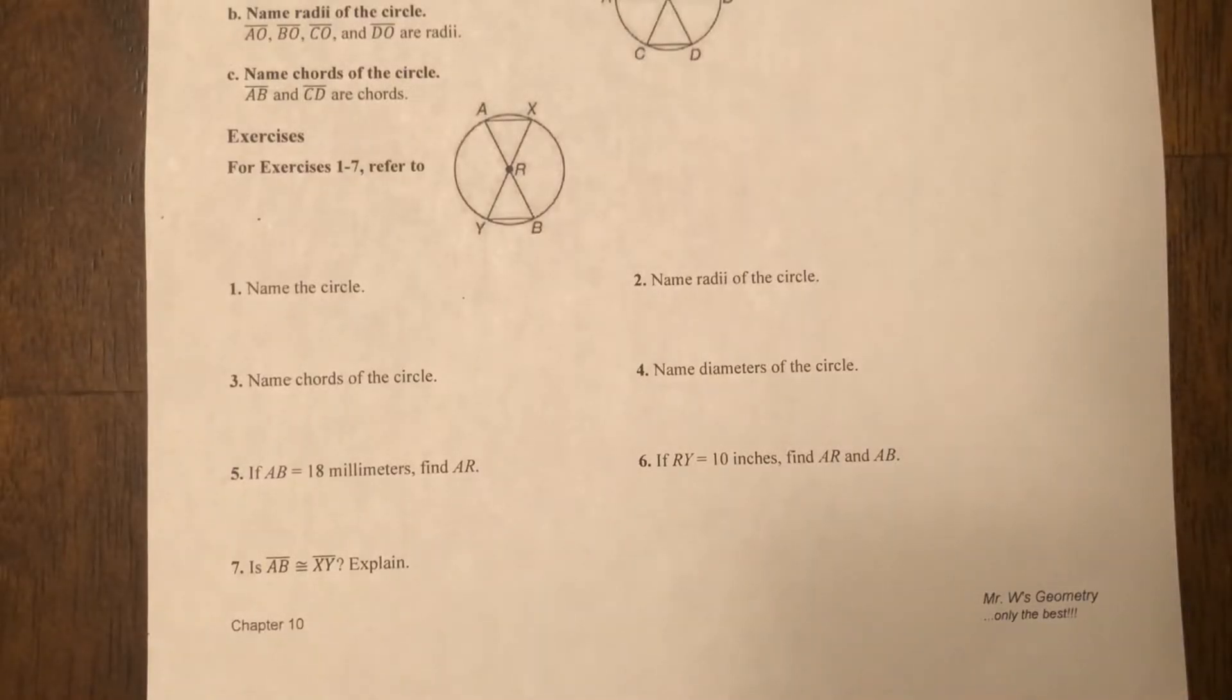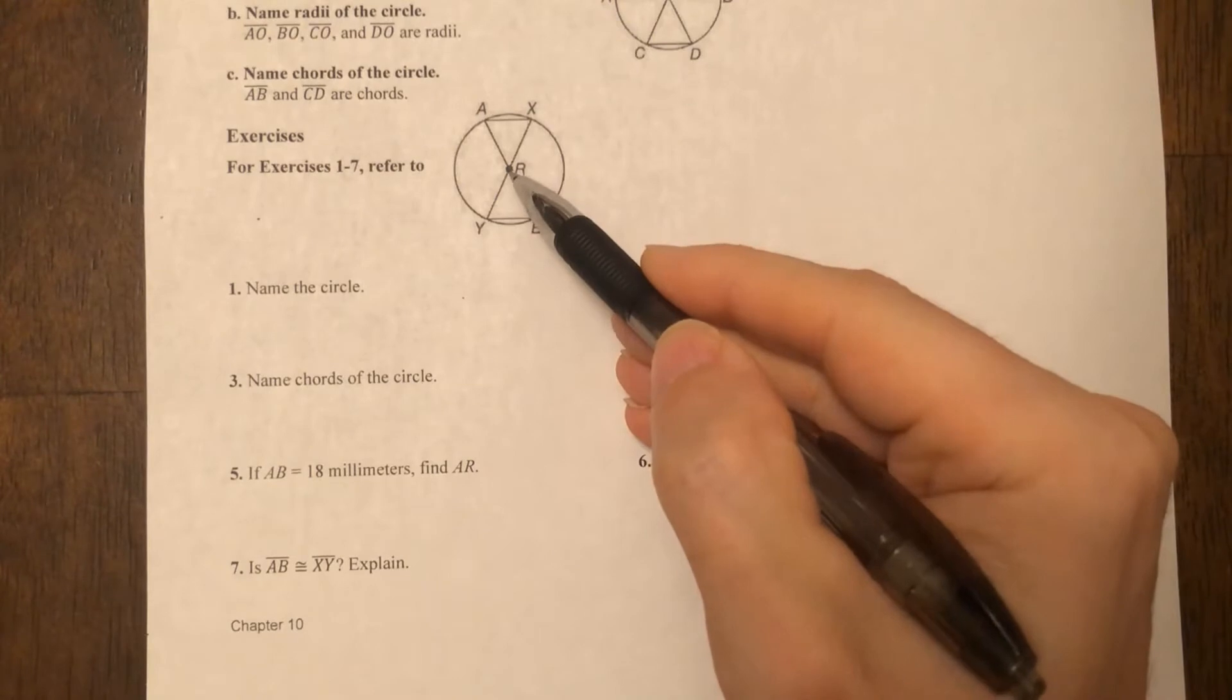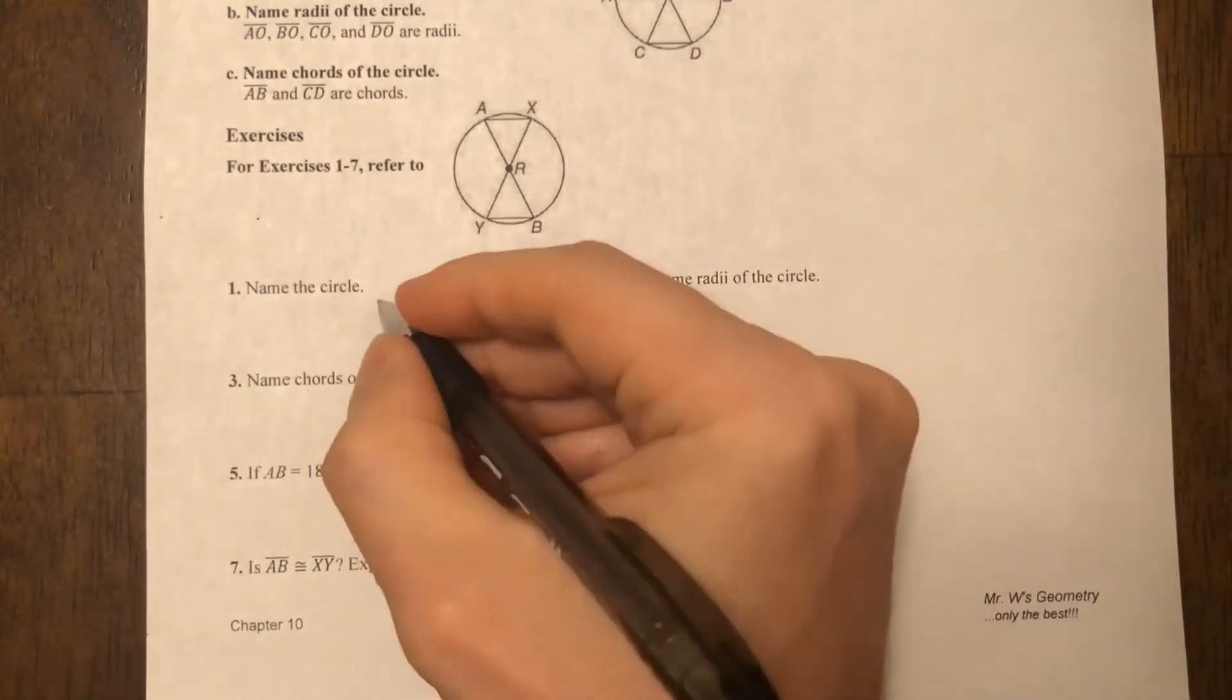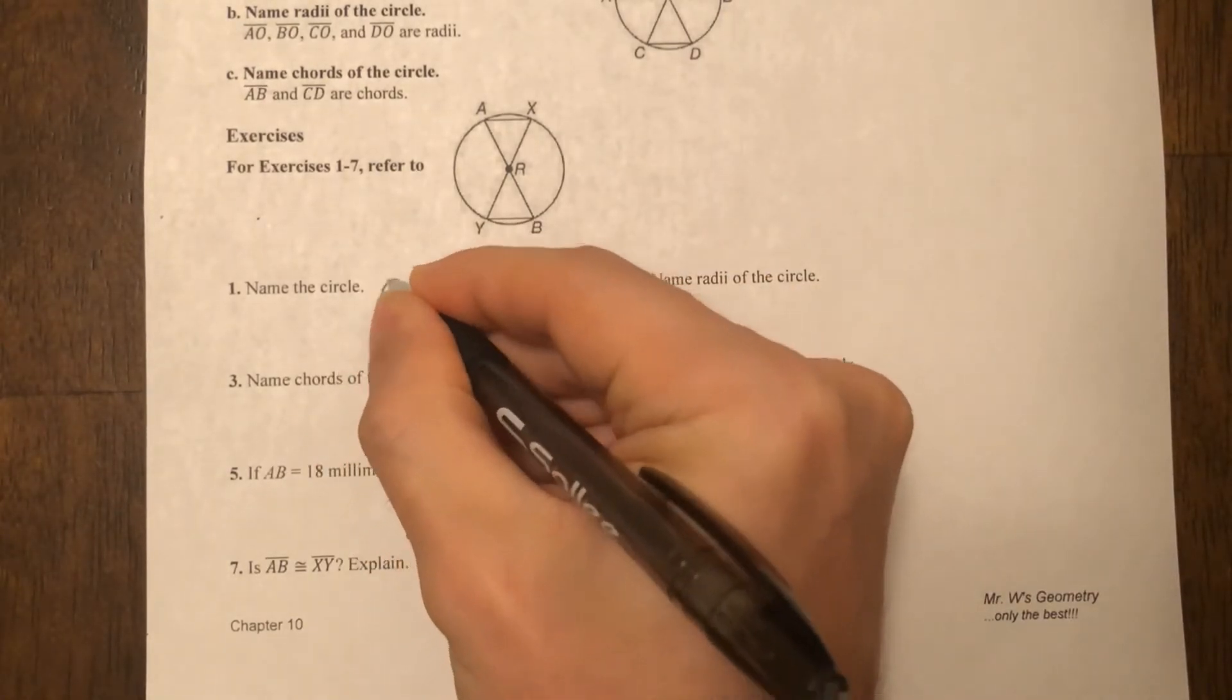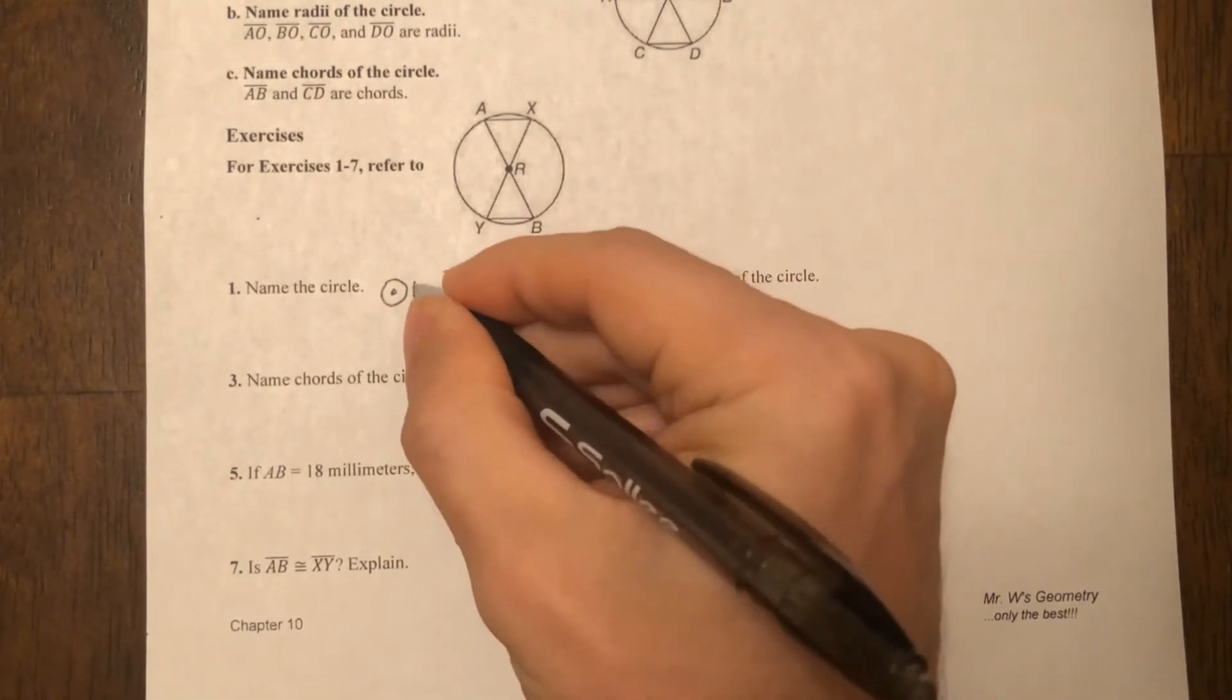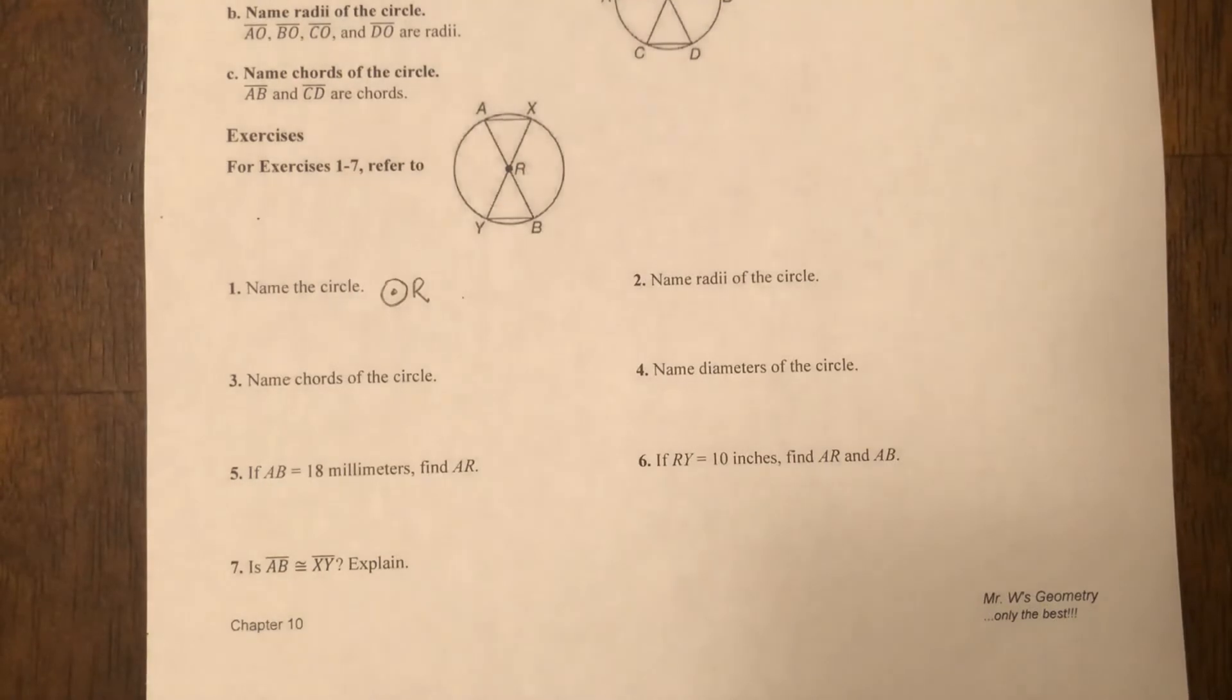All right everybody, so we're gonna go through this step by step. The first thing is naming the circle. When you go to name a circle, you're gonna look at that dot in the center—that's what you name it, whatever that is. Here it's an R, so you'd name this circle R. If it was an X, circle X, and so forth. You're gonna draw a picture of a circle with a little dot in the center and whatever that letter is, put it there. So in this case we have circle R. That's it, done.